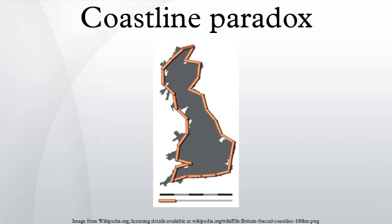However, this figure relies on the assumption that space can be subdivided indefinitely. This assumption, which underlies Euclidean geometry and serves as a useful model in everyday measurement, is a matter of philosophical speculation, and may or may not reflect the realities of space and distance on the atomic level. The Planck length, many orders of magnitude smaller than an atom, is proposed as the smallest measurable unit possible in the universe. Coastlines differ from mathematical fractals because they are formed by numerous small events which create patterns only statistically.